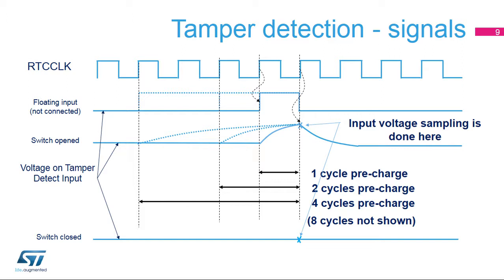This figure illustrates tamper detection using the internal pull-up. The internal pull-up can be applied for 1, 2, 4, or 8 cycles. If the switch is opened, the level is pulled up by the resistor. If the switch is closed, the level remains low. The input voltage is sampled at the end of the pre-charge pulse.